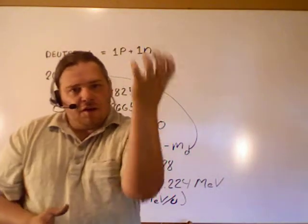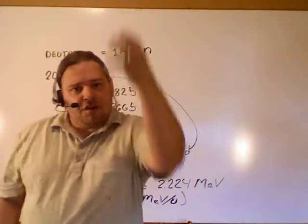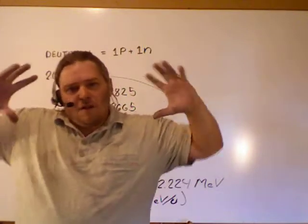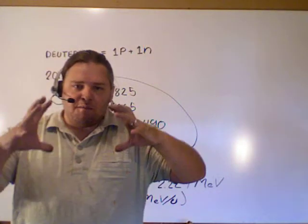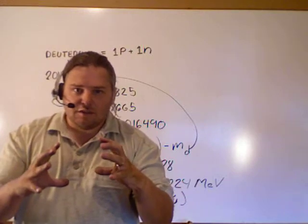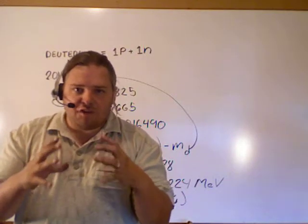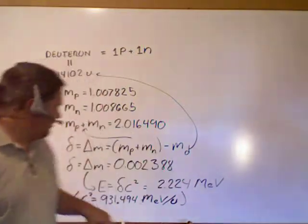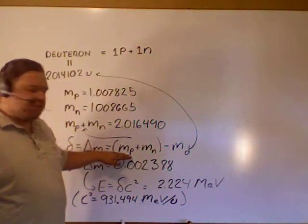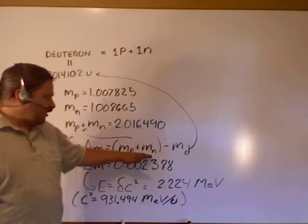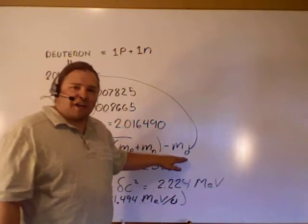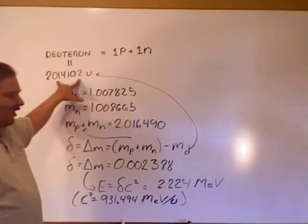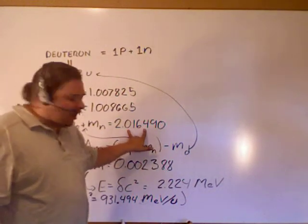So I've got the number of protons times the mass per proton, the number of neutrons times the mass per neutron gives me the theoretical mass value, the mass value it should have, if matter was conserved. And we know it's not. This right here is referring to the amount of mass that it should have, minus the amount of mass that it does have.